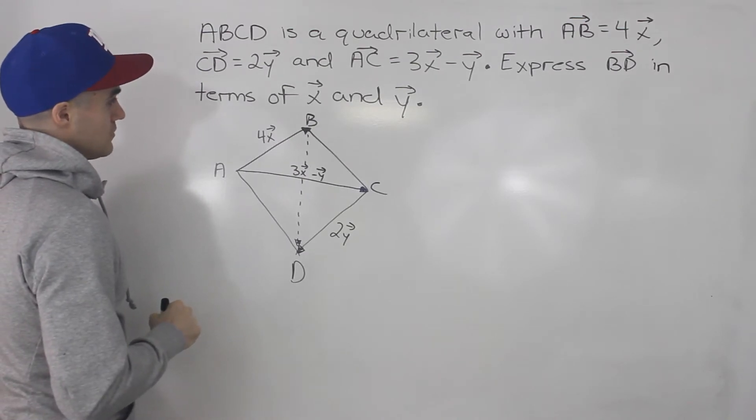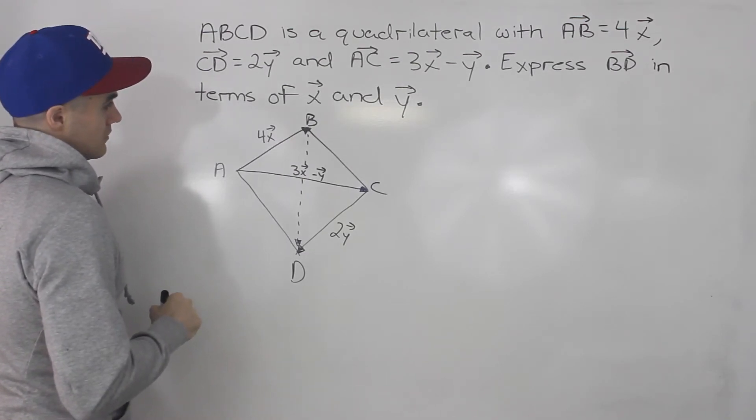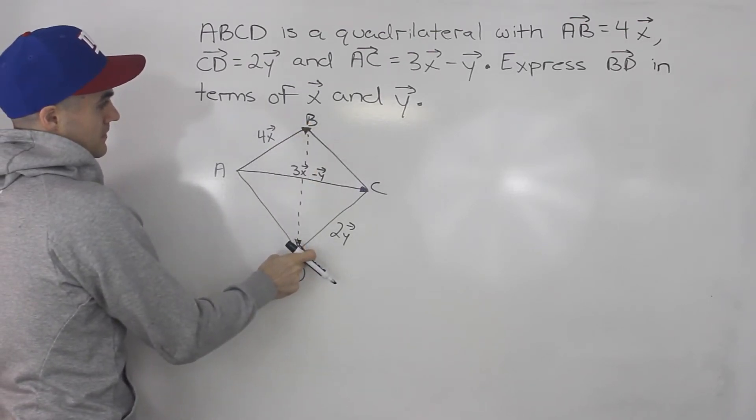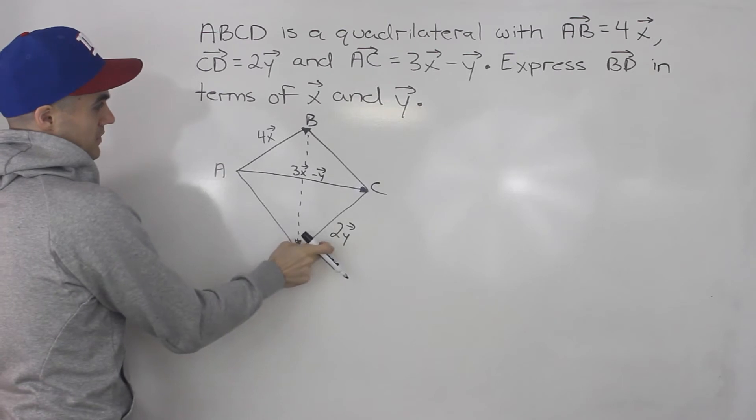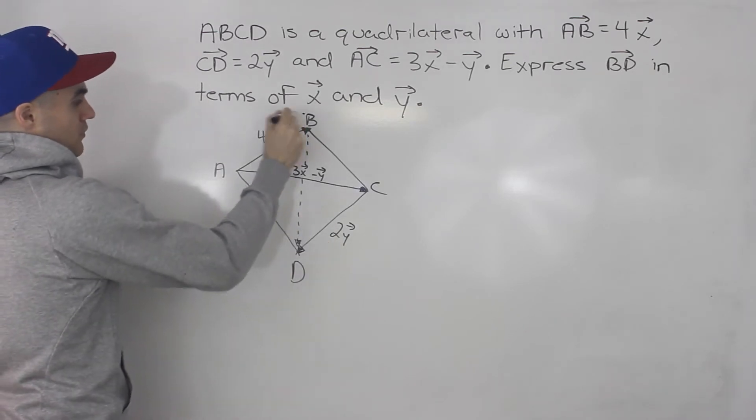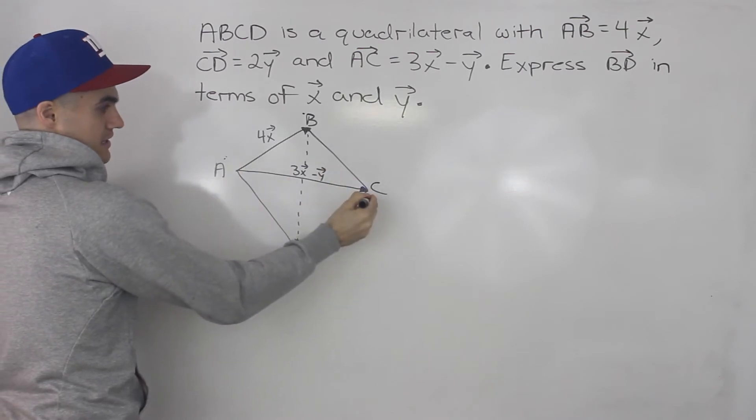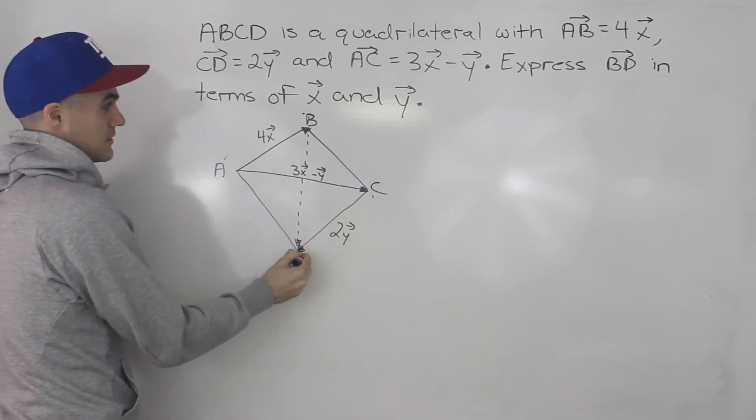So how can we do that? How can we go from B to D using these three vectors? Notice we can go from B to A, then from A to C, then from C to D.